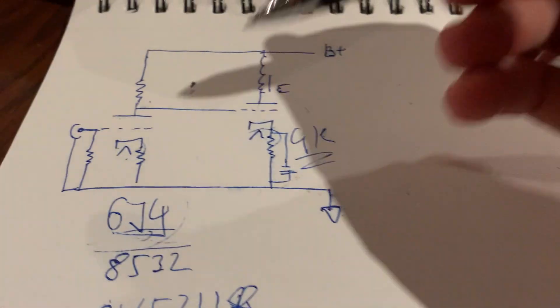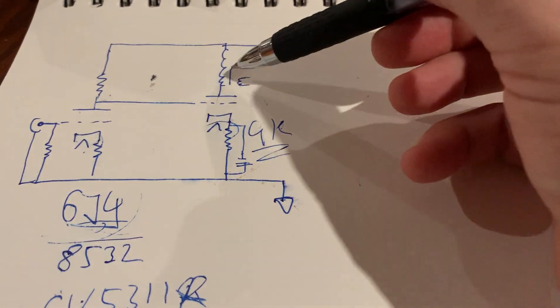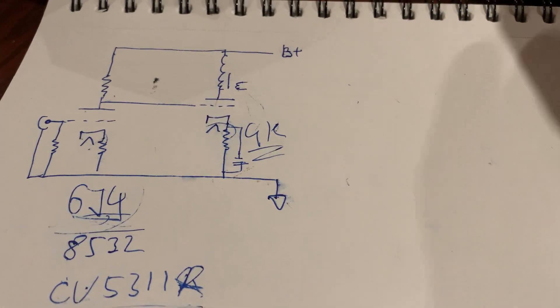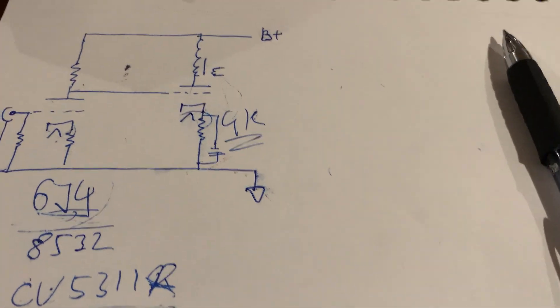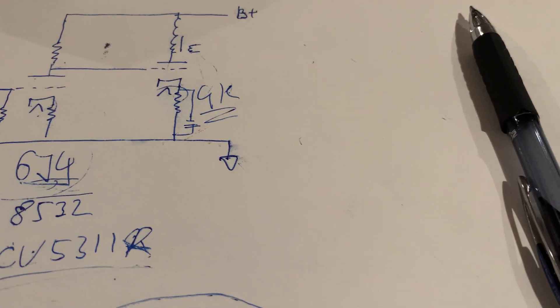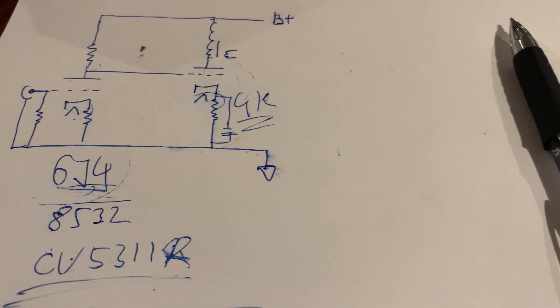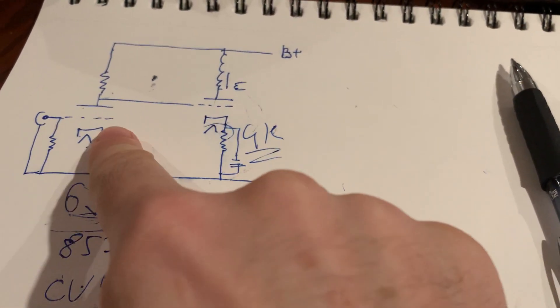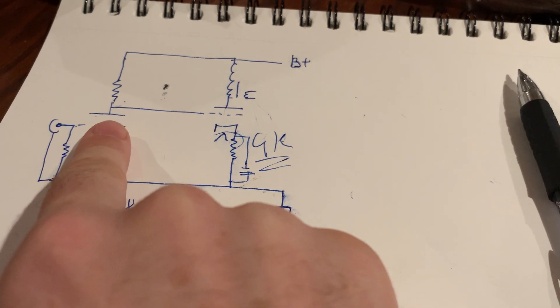So you could make an improved version of this amplifier for yourself by taking the 6SL7 as driver tube and direct coupling it to the 45. Then you can run the 6SL7 at really high plate voltages, I mean high compared to a driver tube or an input tube.